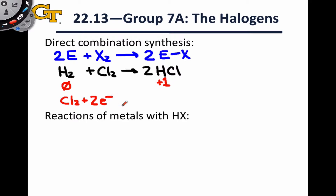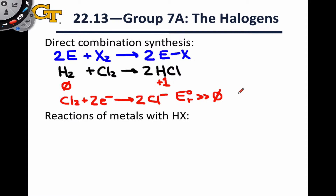That is, the ability of Cl₂ to accept two electrons to become Cl⁻. It's the large reduction potential associated with this reaction and the resulting highly negative ΔG that is the driving force for these types of reactions.